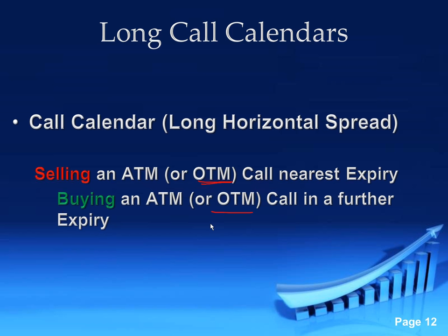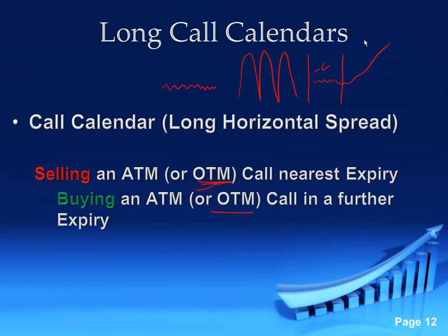This strategy, especially in this environment, does very well if the market just kind of trades sideways. We haven't had straight sideways trading recently — we've had more of a whipsaw kind of thing, and that works better with these out-of-the-money calls. The best-case scenario would be to have it trade sideways and then rally up, where that front month short call expires worthless and you have that long call on for very cheap.